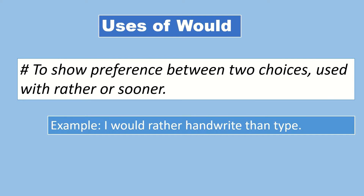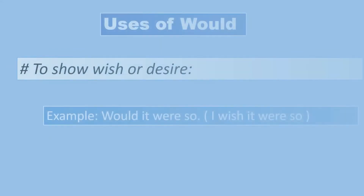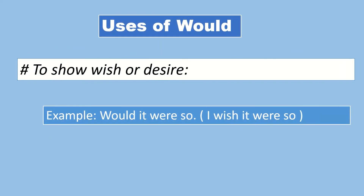It means I would prefer to write by hand than type. So when choices are given, you use 'would.' The word is also used to show a wish or desire. For example: 'Would it were so.' The sentence means 'I wish it were so.' So when you are expressing desires or wishes, you use 'would.'